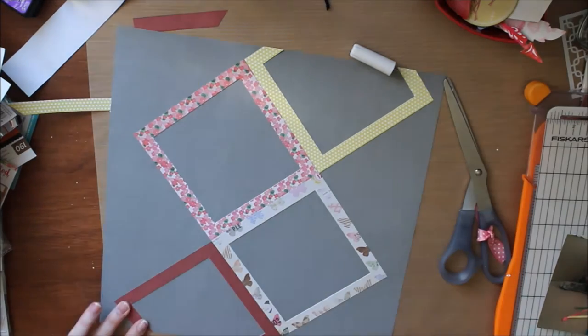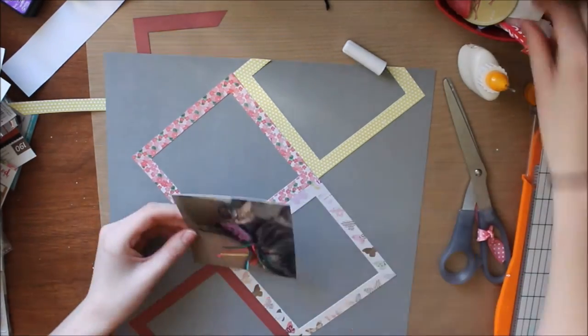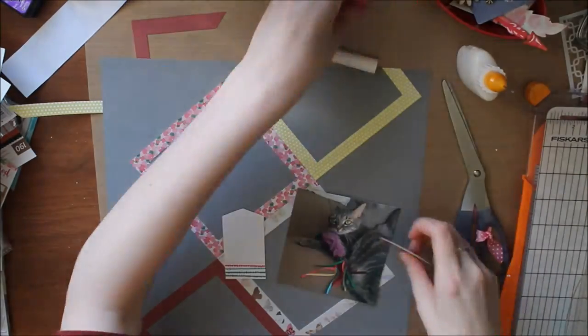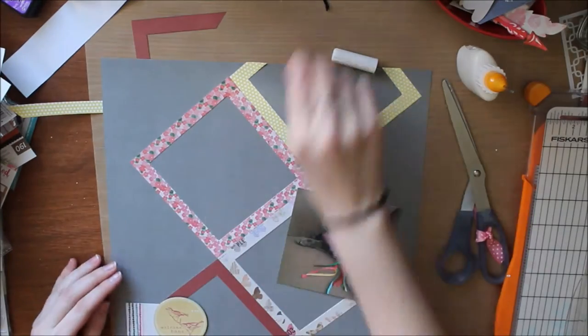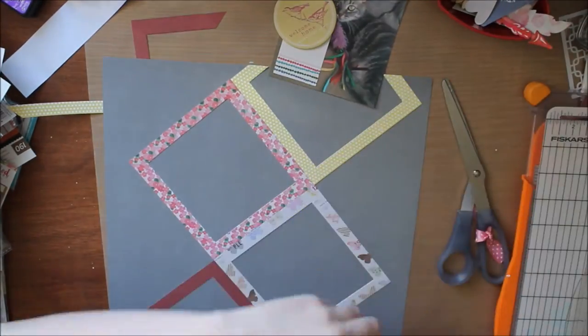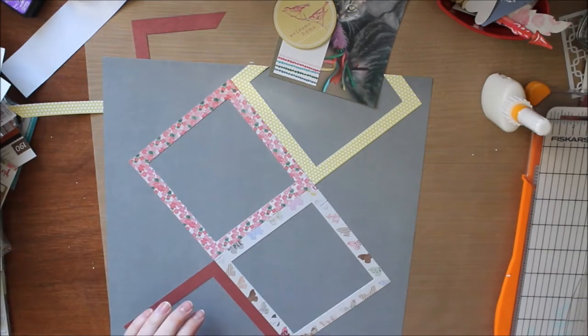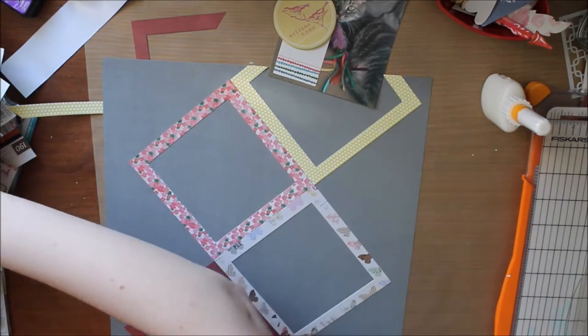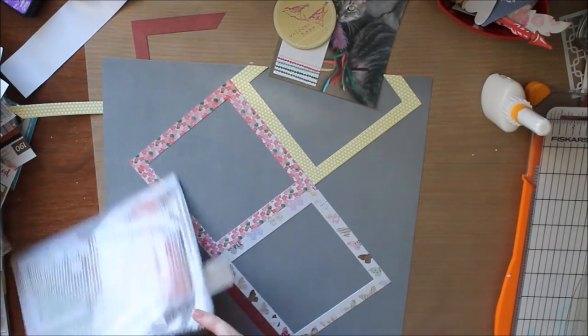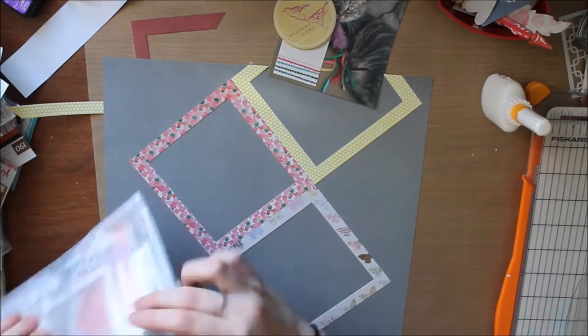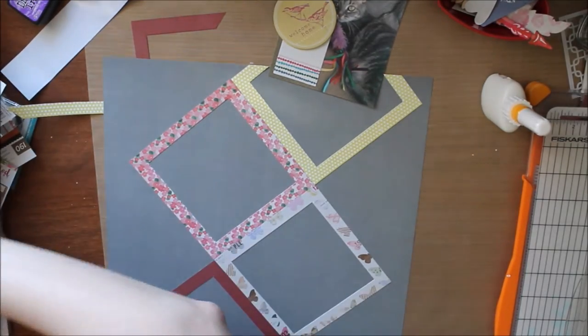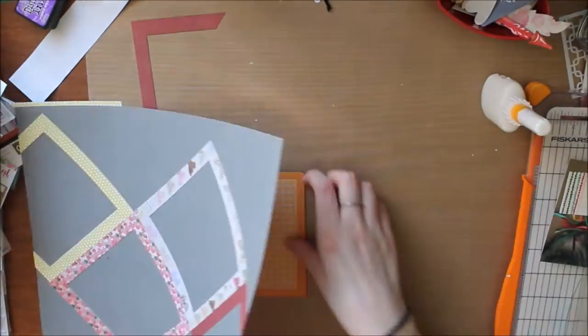Just gluing down the edges. And I have a few embellishments that I've picked out already. I have an American Crafts chipboard piece and an Ellie's Studio tag die cut. I'm not sure which collection that was from.